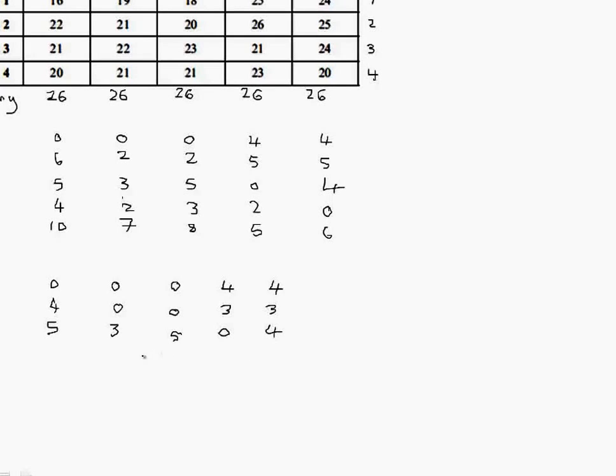The next row, again, there's a zero in there. So, that row doesn't change. Four, two, three, two, zero. And then, finally, the smallest element in the bottom row is five. So, we subtract five from each element.